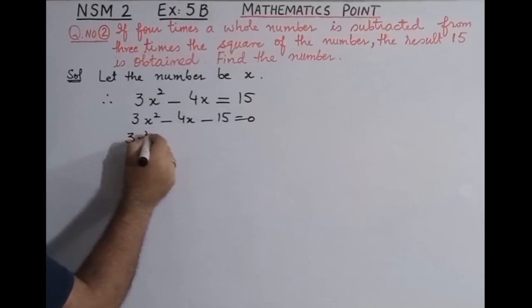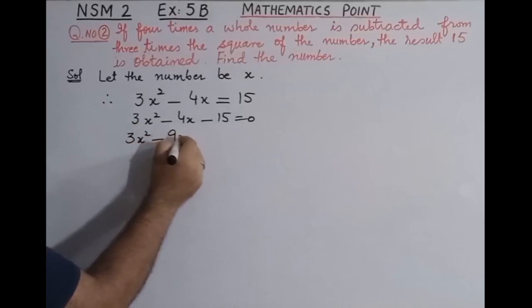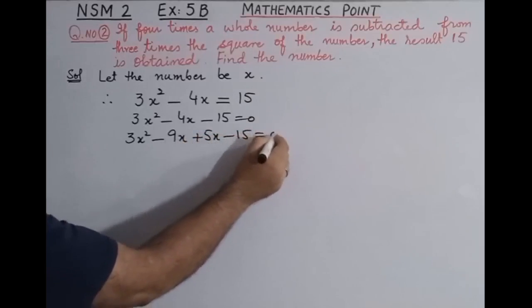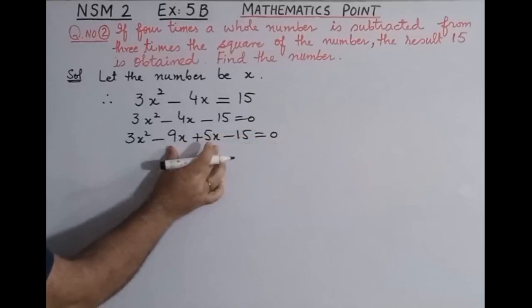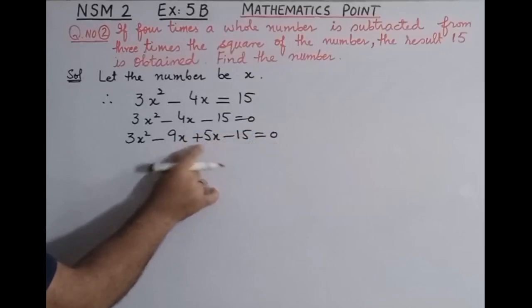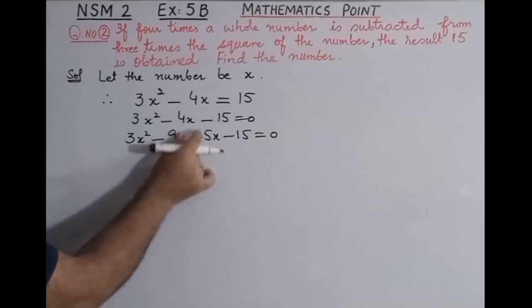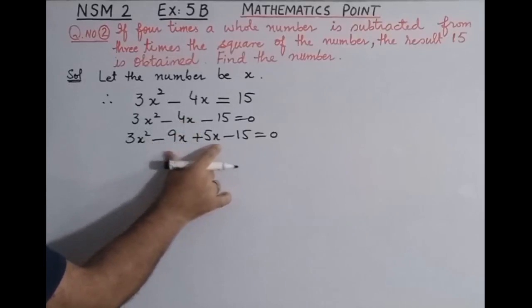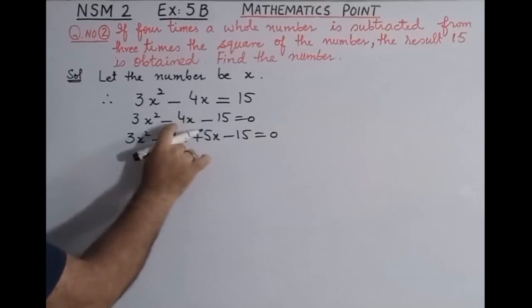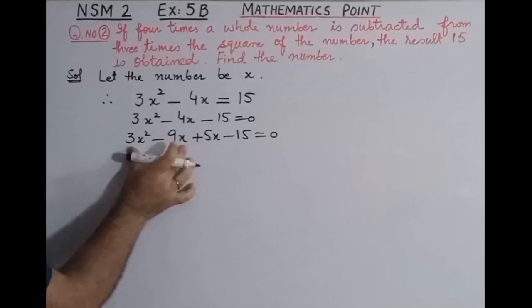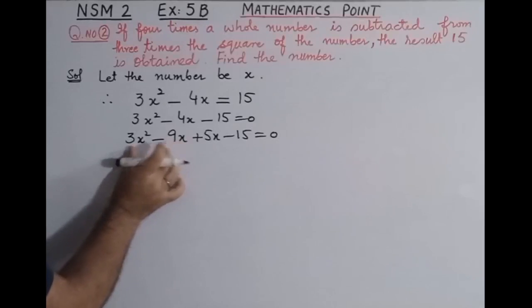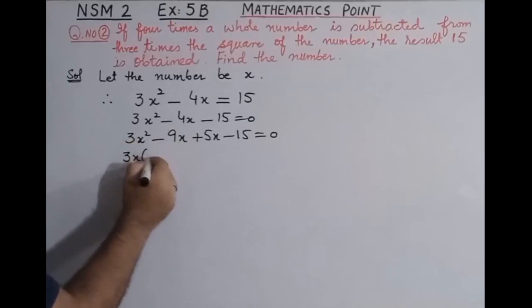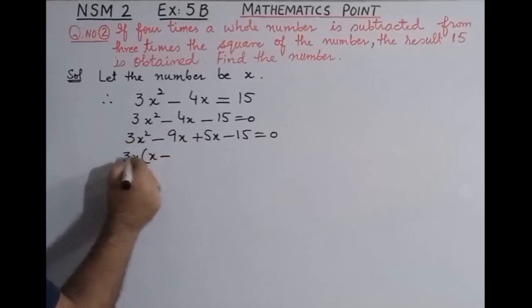So we have: 3x² - 9x + 5x - 15 = 0. If you combine -9x + 5x you get -4x, which confirms our middle term. Now taking 3x as a common factor from the first two terms, we get 3x(x - 3).